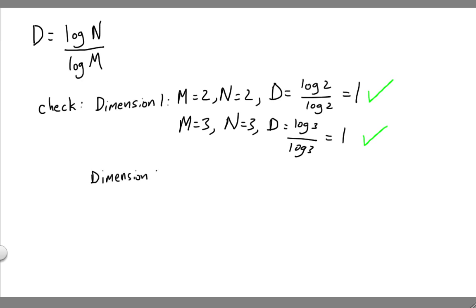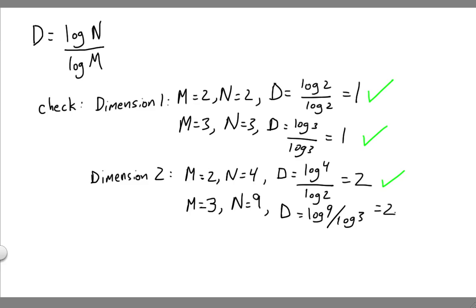Let's check for two-dimensional objects. For two-dimensional objects, if we're bisecting, then dimension equals log 4 divided by log 2. That's equal to 2. You can check that on your calculator if you like. For trisecting, we get M equals 3, and N equals 9. So d is equal to log 9 divided by log 3, which is also equal to 2. So that works.